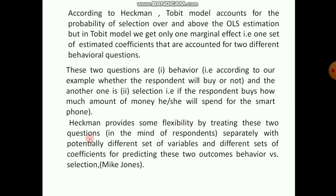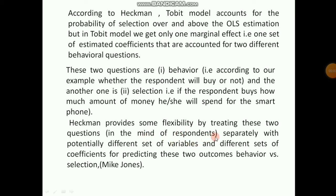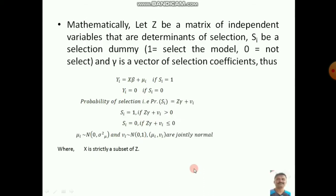According to Heckman, the Tobit model accounts for the probability of selection over and above OLS estimation, but in Tobit we get only one set of estimated coefficients for two different behavioral questions: one is whether the respondent will buy or not, and the other is, if the respondent buys, how much money will he or she spend. Heckman provides flexibility by treating these two questions separately with potentially different sets of variables and coefficients — behavior (purchase decision) and selection (which model to buy).